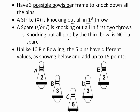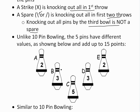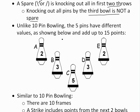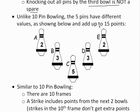A spare is knocking out all pins in the first two throws. Note that knocking out all the pins on the third bowl is not a spare — you just count them as points (15). Unlike 10-pin bowling, the 5 pins have different point values, and they add up to 15.